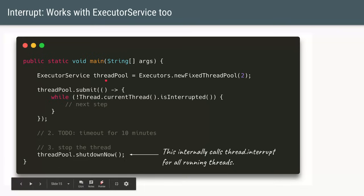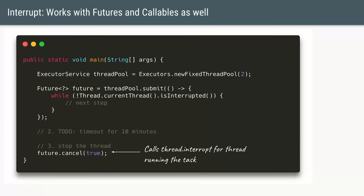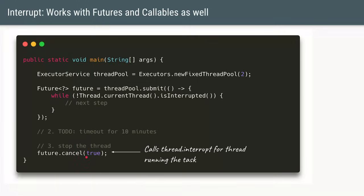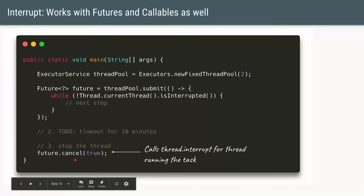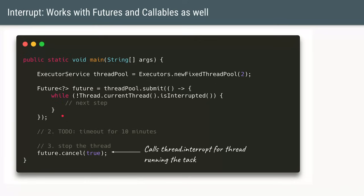That means even when using a thread pool, within the task we can apply the same concept of checking for interrupts. When we call threadPool.shutdownNow, internally it applies the interrupt, our task catches that interrupt, exits the while loop, and the task is marked complete. The same applies to future.cancel. When cancel is called with the parameter value true, whatever thread is running our future-related task is interrupted. So if we have the interrupt check in our task, we'll exit the while loop and complete.